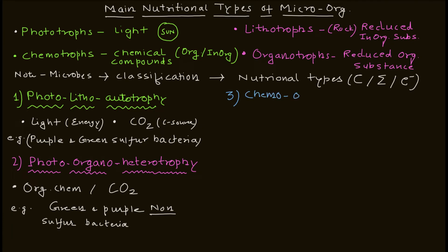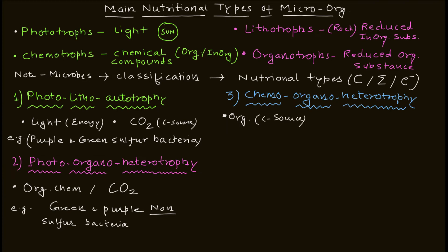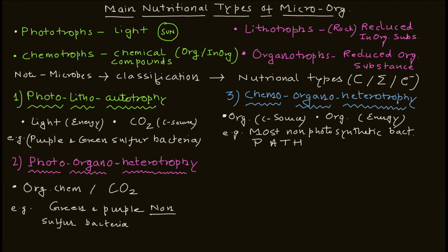The third category is chemo organo heterotrophy, where you're using organic compounds as the carbon source as well as the energy source. This category is really important — the example is most non-photosynthetic microbes, which includes pathogenic organisms. Most pathogenic organisms fall under this category, chemo organo heterotrophy.